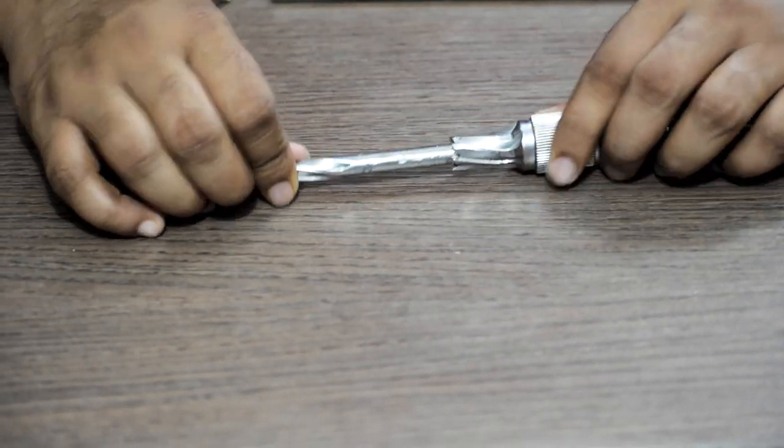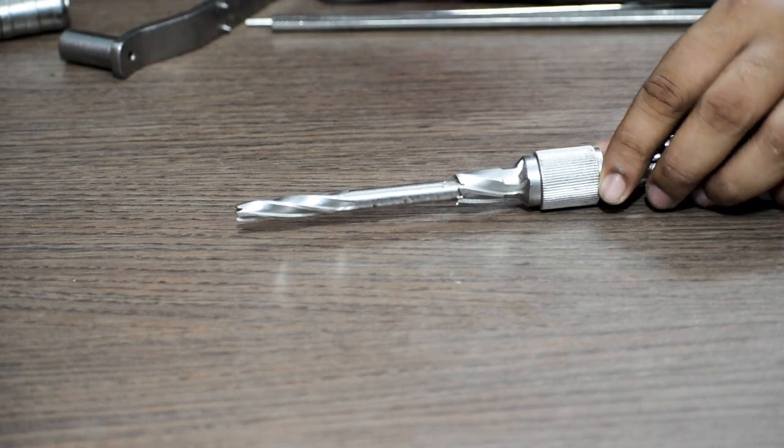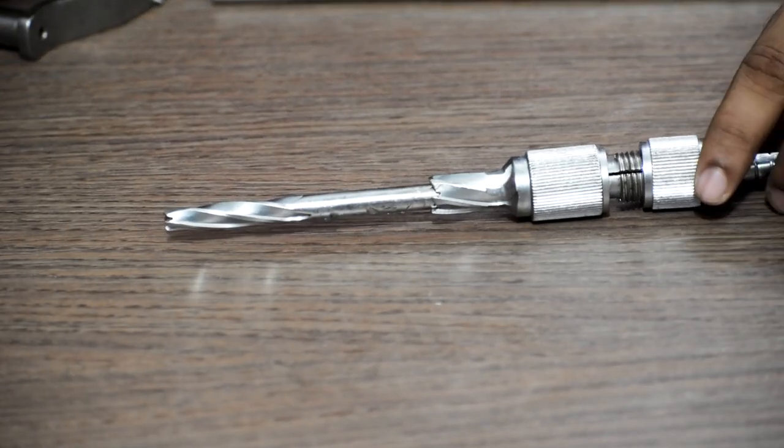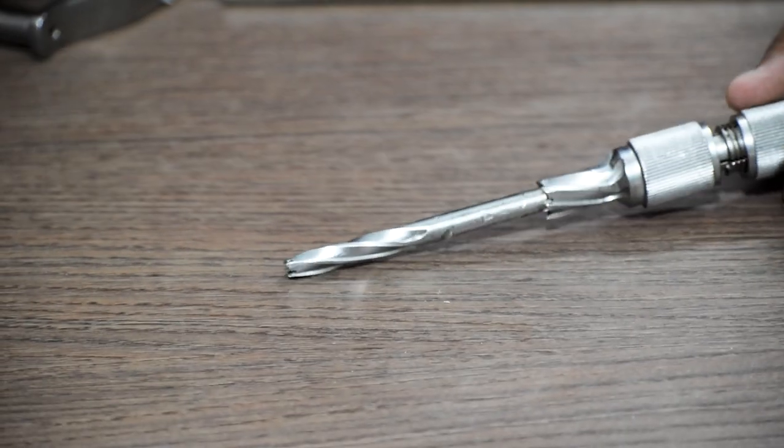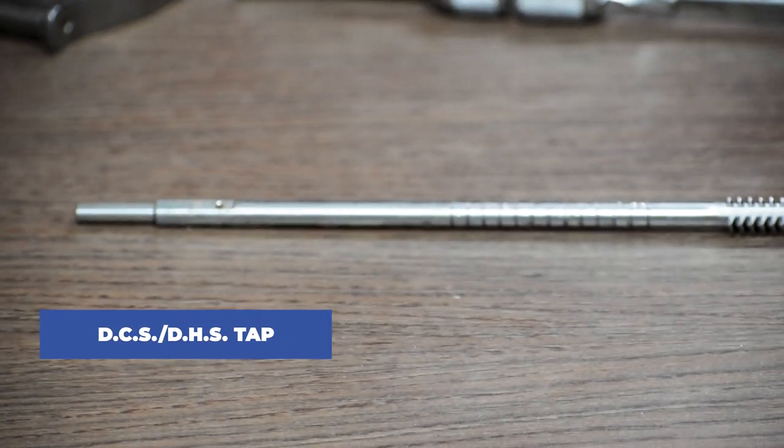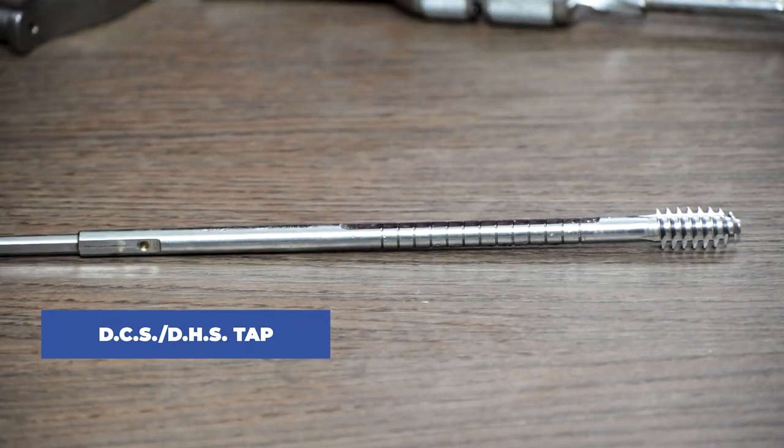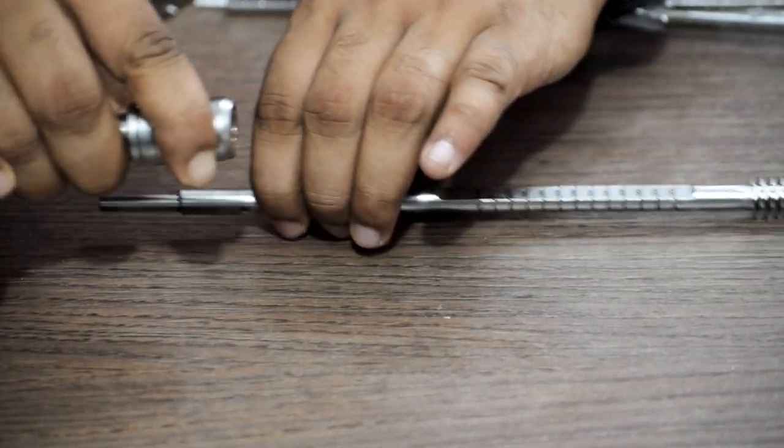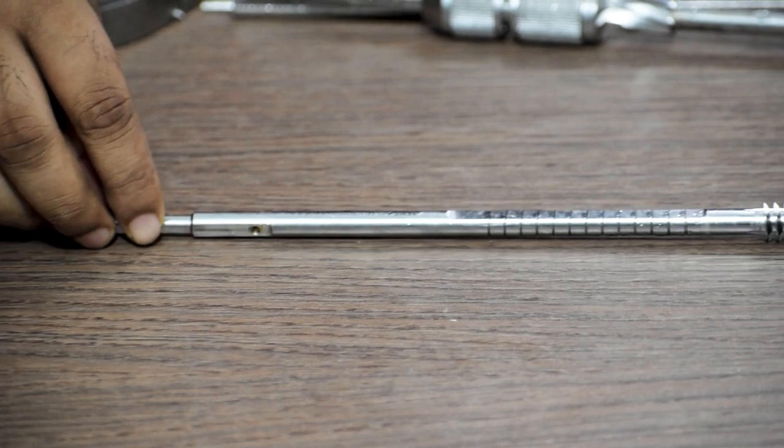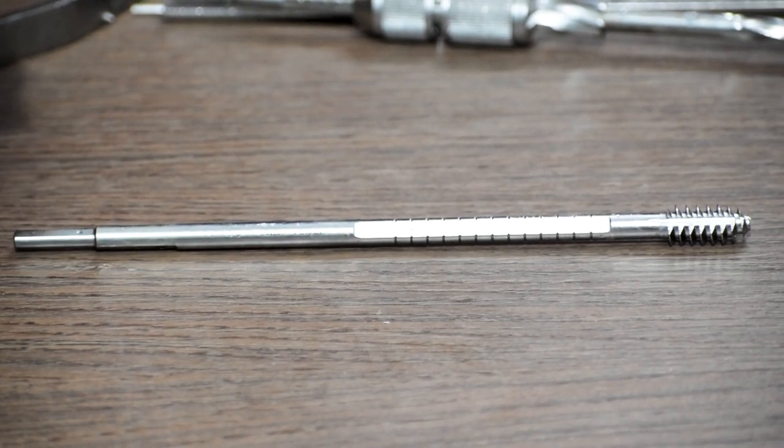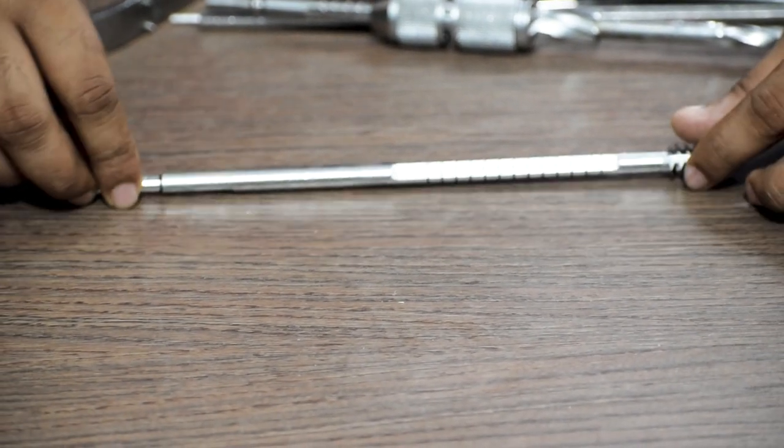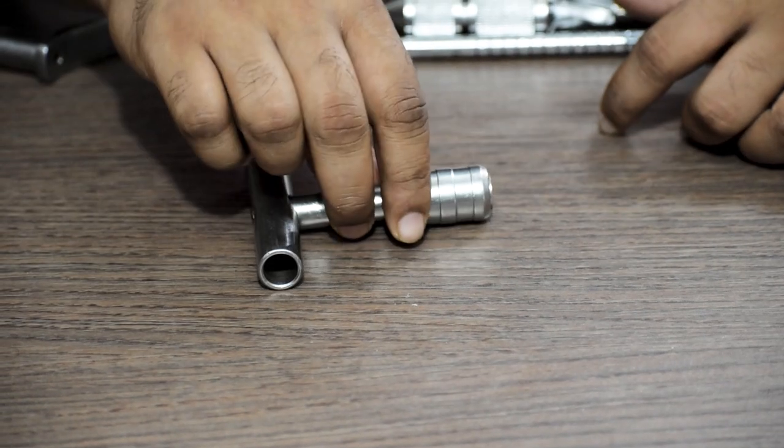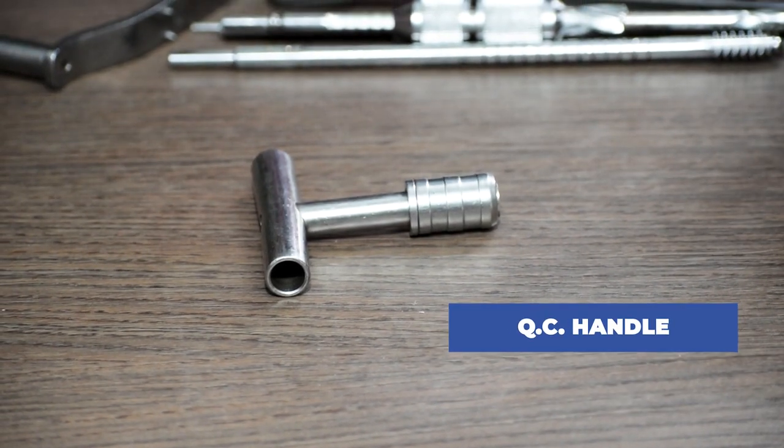This part is the reamer and this is the barrel. This is the DCS or DHS tab. This is a quick coupling handle or QC handle.